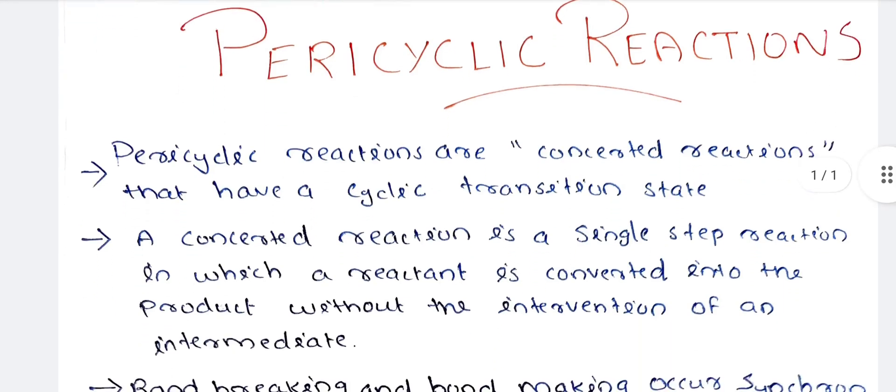Pericyclic Reactions are concerted reactions that have a cyclic transition state. These include Ring Opening Reactions, where a ring is opened, and Ring Closure Reactions, where a closed chain is formed.